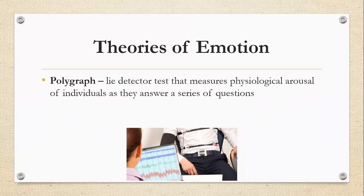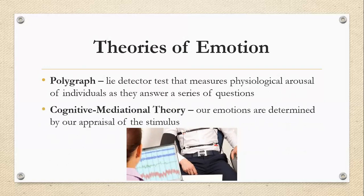With that in mind, let's talk about the last theory of emotion: the cognitive mediational theory. This is the theory that asserts our emotions are determined by our appraisal of the stimulus. So we see whatever stimulus — let's say something causing fear — we see this thing, we think about it, we appraise it in our heads, and then we experience the emotion.